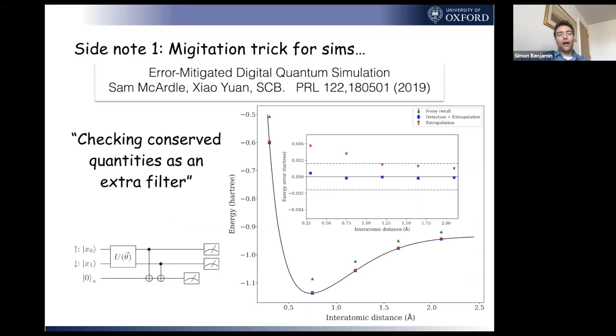A boost to the error mitigation comes when we add in special features that are adapted to the particular problem. Sam, who was a first year student when he cooked this up, was interested in chemistry in particular. He realized that in a chemistry problem, there are certain things that should be conserved. For example, the number of electrons shouldn't go up and down. You may as well check those things for the output of your circuit. And if those things are violated, you just discard that. It improves your signal to noise ratio. In the inset of this graph, we can see the red dots are with standard error mitigation, and that's boosted further by this filtering or symmetry checking property.